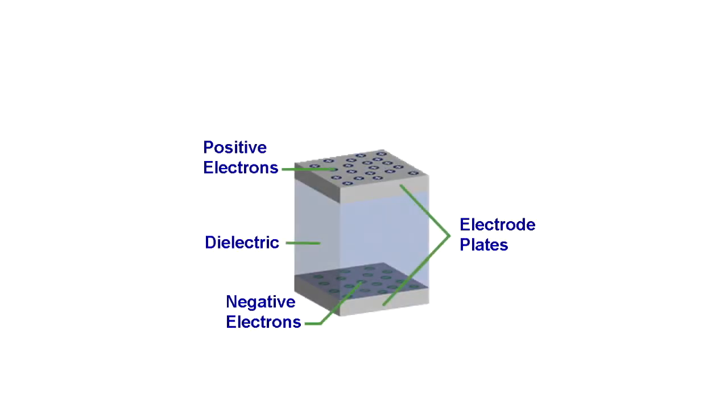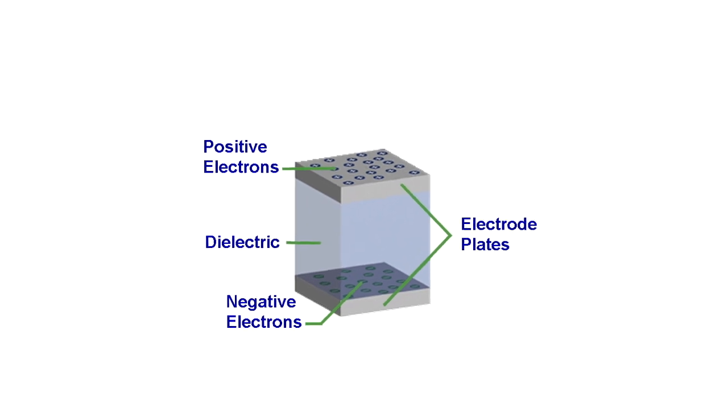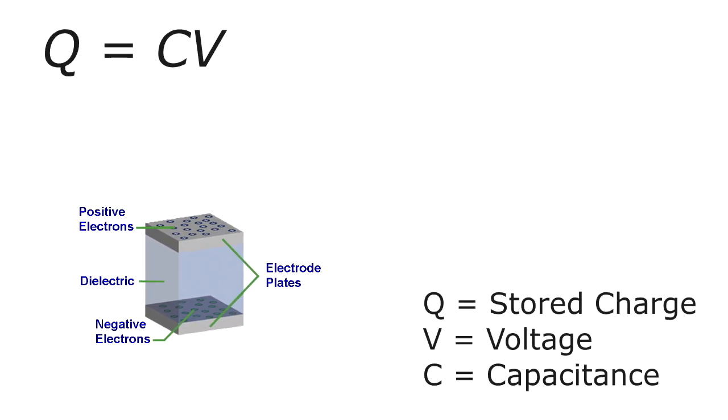Now a capacitor consists of two conducting plates separated by an insulating layer called the dielectric, which we'll talk about more later. The stored charge is proportional to the potential difference or voltage between the plates.